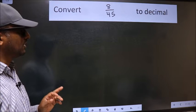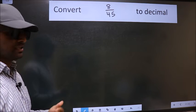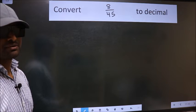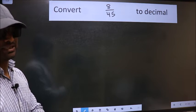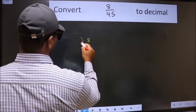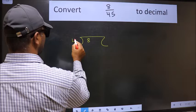Convert 8 by 45 to decimal. To convert to decimal, we should divide. And to divide, we should frame it in this way. 8 here, 45 here.